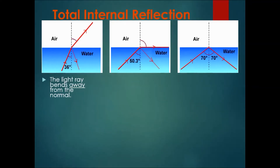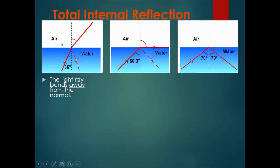If you look at the top, there are three pictures. In all of these pictures, the light ray comes from the water, hits the surface, and goes into the air. Water has a higher refractive index than air, so the light ray would bend away from the normal.